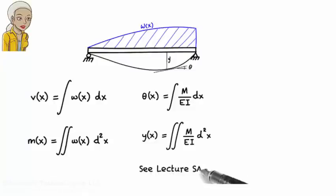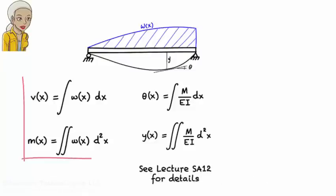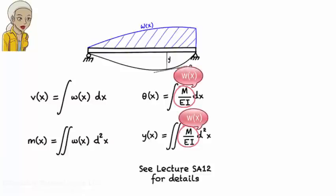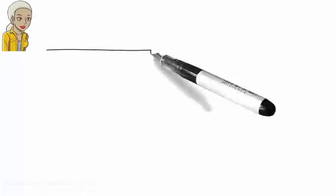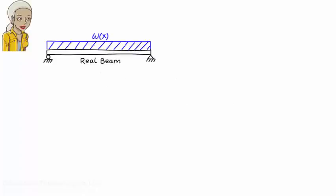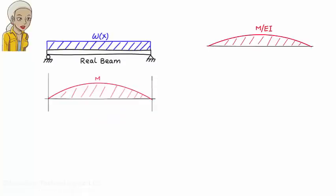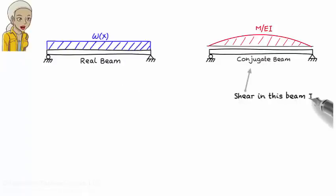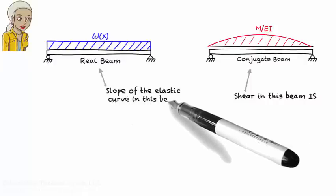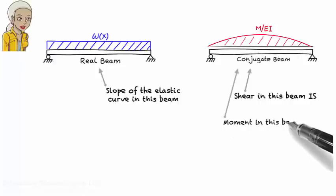See lecture essay 12 if you would like to know why these equations hold true. Note the similarity between these equations and the load-shear-moment equations. If we view M over EI as a continuous load applied to a beam, then theta represents shear in the beam, and Y represents moment in the beam. In other words, if we draw the moment diagram for the real beam, divide the diagram by EI to get the M over EI diagram, and treat this diagram as a distributed load placed on a beam similar to the real beam, then shear in that beam corresponds to the slope of the elastic curve, and bending moment in that beam corresponds to the real beam's deflection.